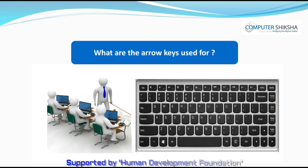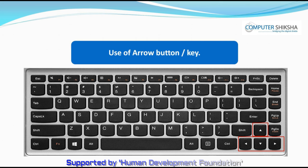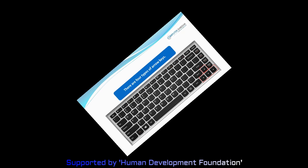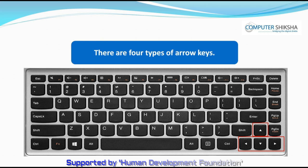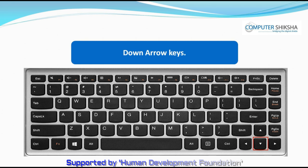What are the arrow keys used for? Arrow keys help us to take the cursor up, down, right, or left on a page as per our requirement. The arrow keys are of four types: left, right, up, and down.